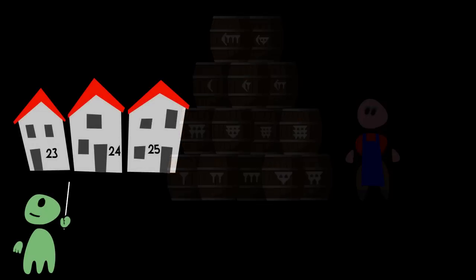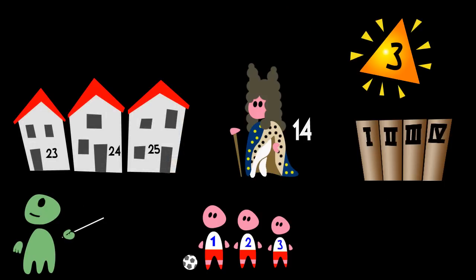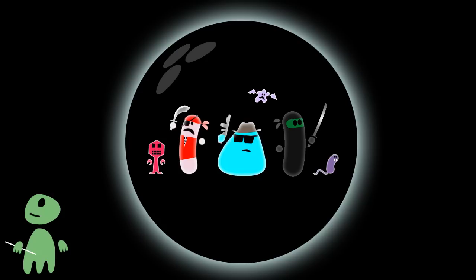Earthlings are obsessed with numbers. They count and number everything: houses, offspring, vehicles, books, even kings and gods, everything. Except for the microbes.